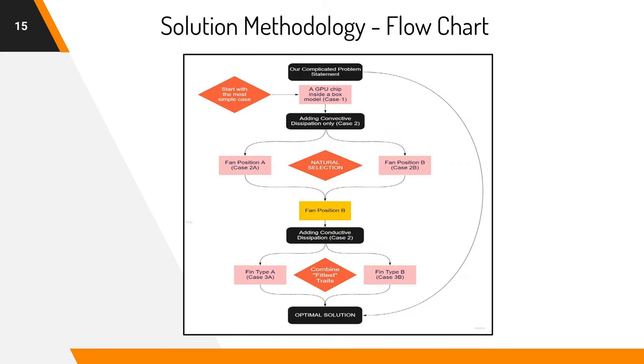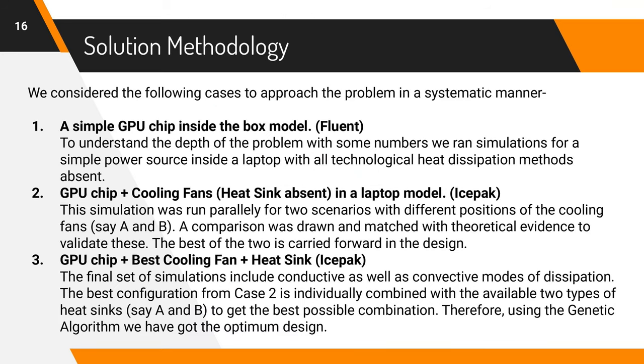This flowchart explains our solution methodology and the flow of this presentation. We start with a simple problem, the base case. Then we add convective heat transfer with two possible configurations. Let's call them cases 2A and 2B. The best out of these two is then combined individually with the two different types of fins we have, rectangular and cylindrical. And let's call these cases 3A and 3B. Now, the best amongst 3A and 3B is the best possible configuration with the given two traits of fan configuration and type of heat sink because it contains the fittest version of both the traits. So, the solution methodology involves solving only three broad cases.